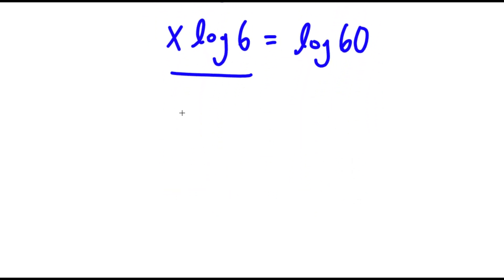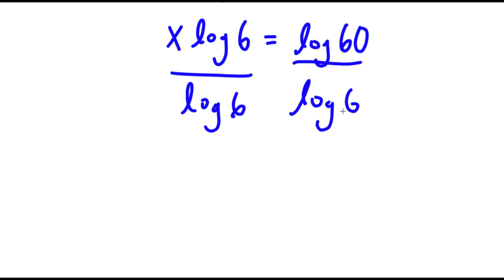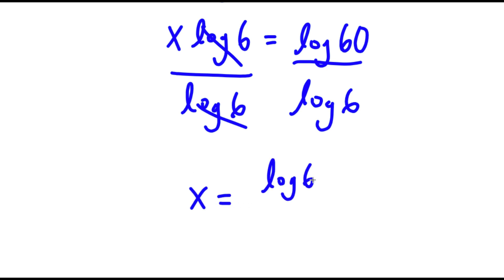Now I'm going to divide both sides by log 6. So then these two cancel out, and now I have x is equal to log 60 over log 6.